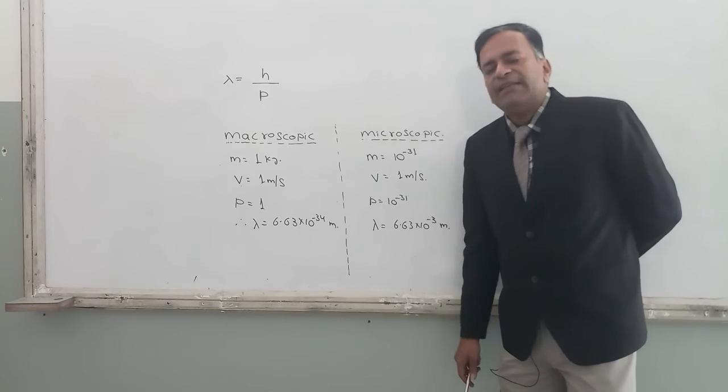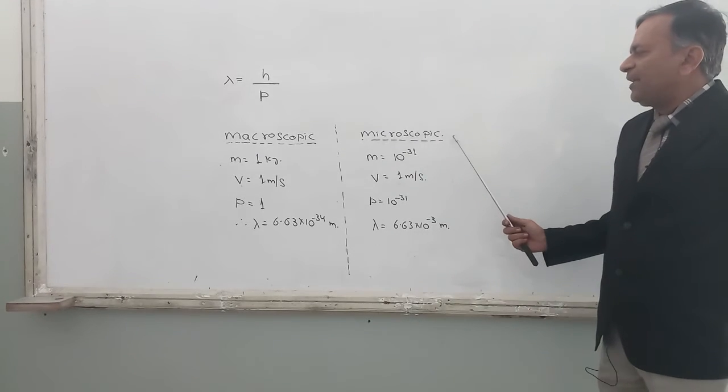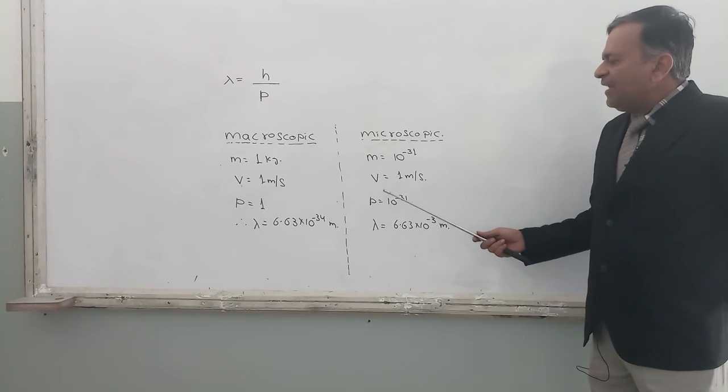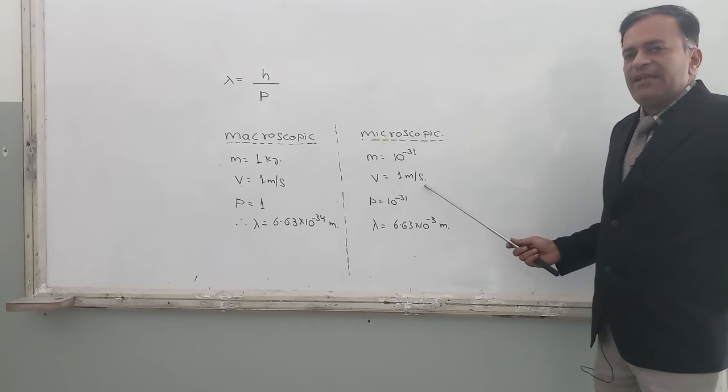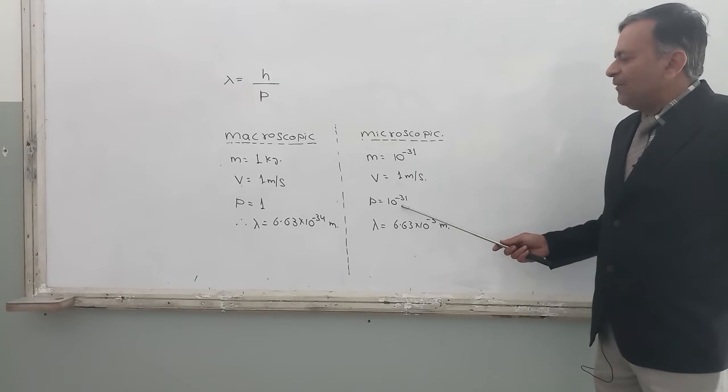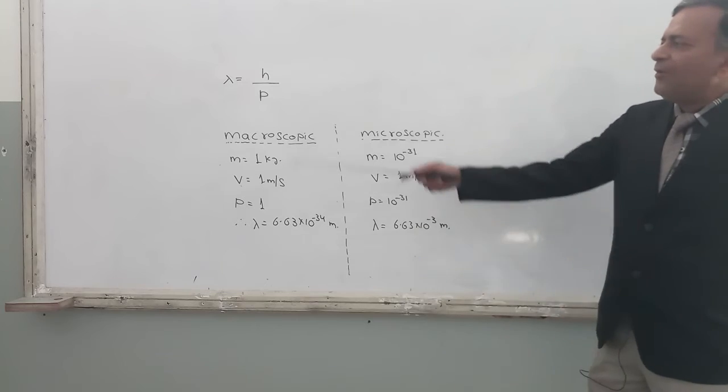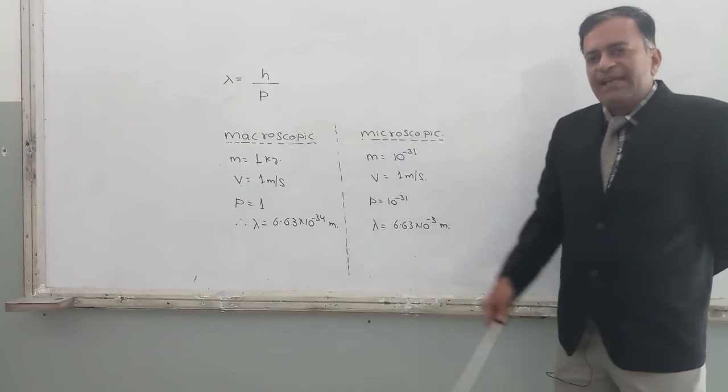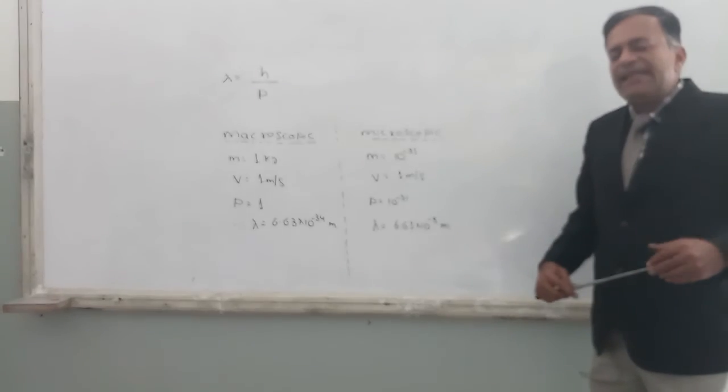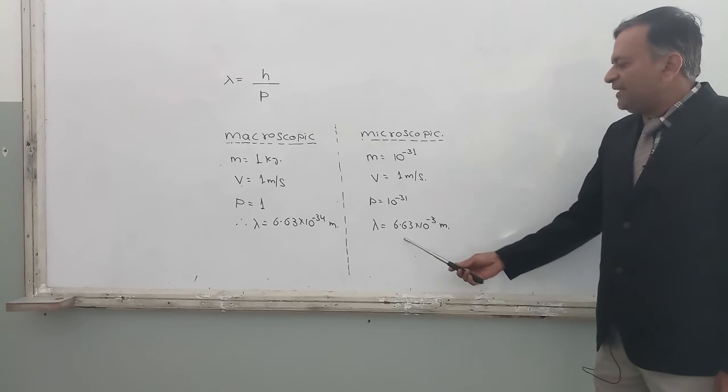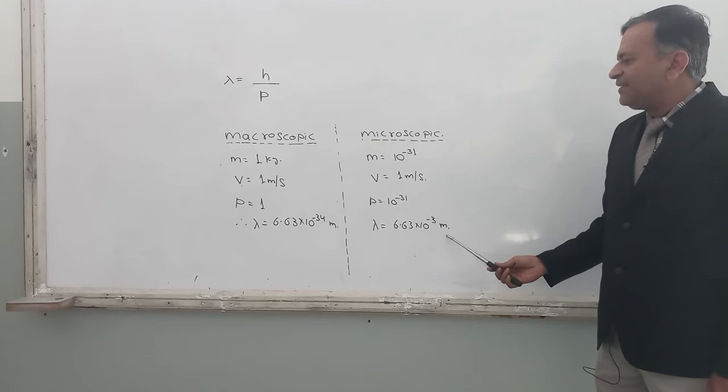If we, on the other hand, come to microscopic particles like electrons whose mass is of the order 10 to the power minus 31 kg, and if they are moving with a speed of 1 meter per second, then the momentum is 10 to the power minus 31 in magnitude. And when I put this momentum over here and calculate the wavelength, it comes out to be a reasonable number: 10 to the power minus 3, 6.63 into 10 to the power minus 3 meters. Now this wavelength is actually significant.